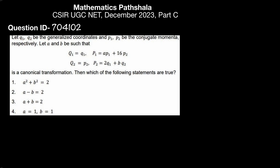Let small q1, q2 be the generalized coordinates and small p1, p2 be the conjugate momenta respectively. Let A and B such that capital Q1 equals this, capital P1 equals this, capital Q2 equals this, and capital P2 equals this is a canonical transformation. Then we have to find which of the following statements are true.